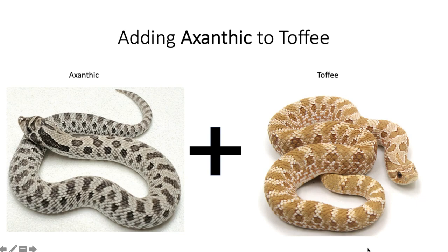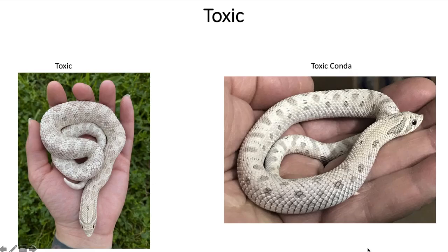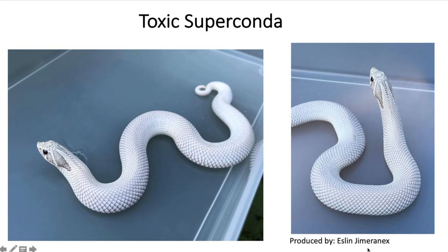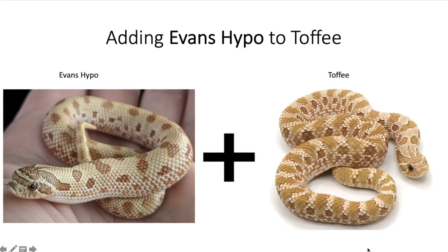The next recessive gene is axanthic mixed with toffee — if you saw my axanthic video you've already seen this. When you mix those two together you get what's called a toxic: basically a grayish animal. On the left is a regular toxic, on the right is the toxic conda with a reduced pattern. Once you get the toxic with two copies of the conda gene you get the toxic super conda — I think this is the best looking super conda morph out there right now, better than the snow or albino super condas.